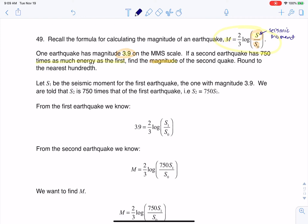So if I talk about the seismic moment for this first earthquake, the one that was the 3.9, I don't know the amount of energy released. It didn't give me an actual number, but I'll just call that S sub 1 for the first earthquake. And then what I know based on the wording of this question, or the way this question was set up, is that S sub 2 is 750 times as much as S sub 1. So I have this little formula right here.